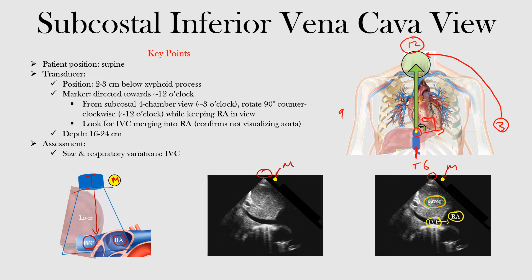Let's recap this view. This is the subcostal inferior vena cava view. The patient is in the supine position. Just like the subcostal four-chamber view, the transducer is two to three centimeters below the xiphoid process. What's different is we go from the three o'clock position counterclockwise to the 12 o'clock position, looking pretty much straight down, keeping the right atrium in view, and looking for the inferior vena cava merging into the right atrium — confirming we're not looking at the aorta but the IVC.